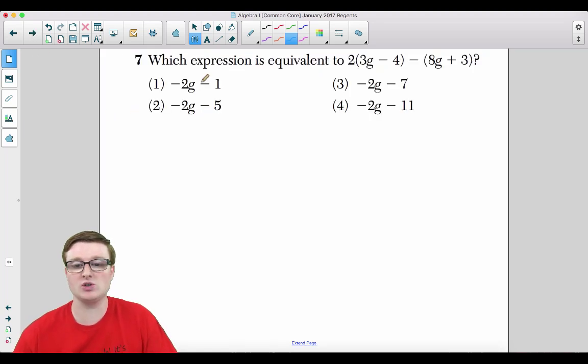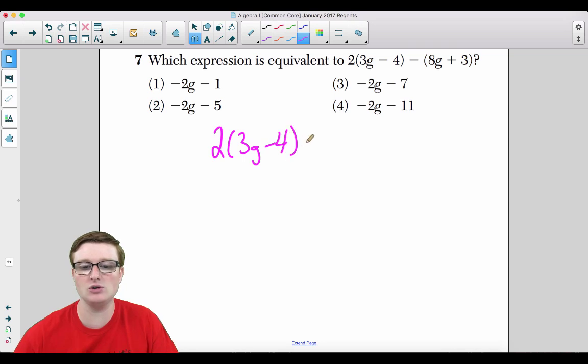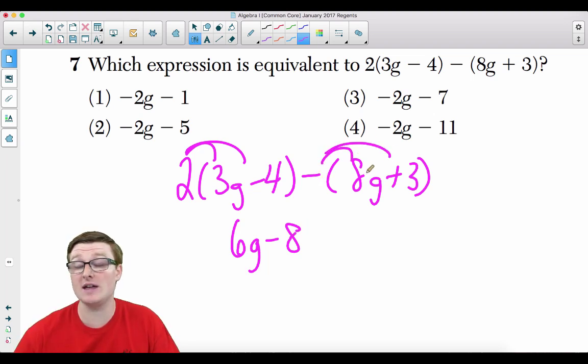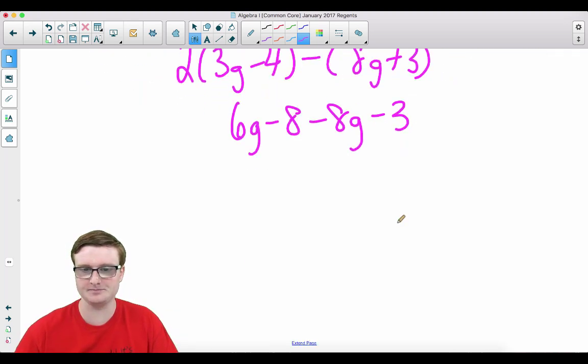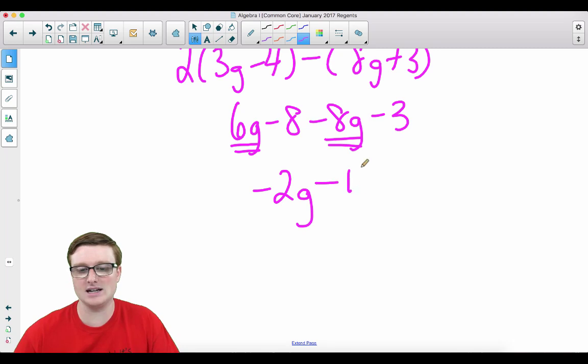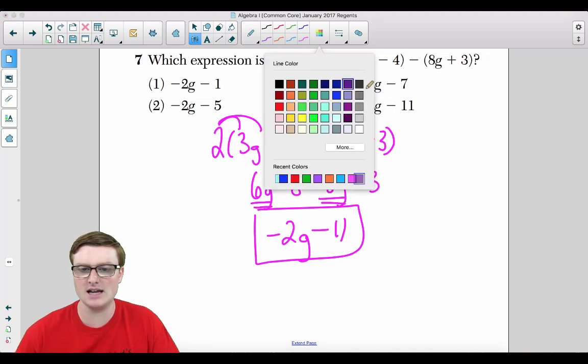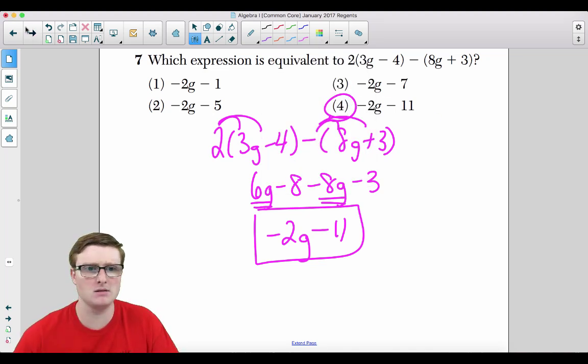Number 7. Which expression is equivalent to 2 times (3g - 4) minus 8g + 3? What we do is we take 2 times (3g - 4), and we are going to distribute that 2 in those parentheses. Take the 2, distribute it in. So we get 6g minus 8. Now, ladies and gentlemen, there's a negative here. You need to distribute that negative in. That's your keep, change, change idea of expression. So we get negative 8g minus 3. Now we just combine like terms. 6g minus 8g, that's negative 2g. Negative 8 minus 3 is negative 11. So that is going to be choice 4 for question number 7.